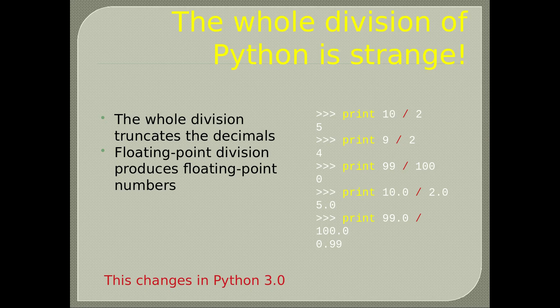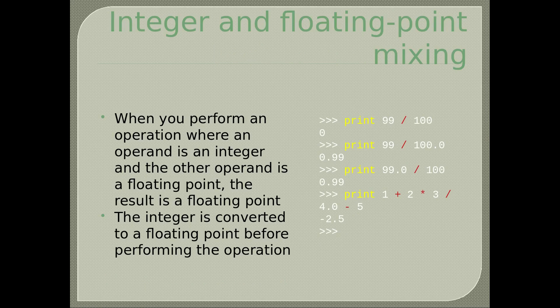Integer and floating point mixing: when you perform an operation where one operand is an integer and the other is a floating point, the result is a floating point. The integer is converted to a floating point before performing the operation. For example, print(99/100) gives 0.99, and print(99.0/100) gives 0.99. If you type print(1 + 2 * 3 / 4.0 - 5), the result is negative 2.5.